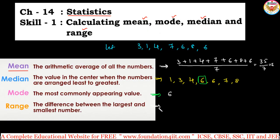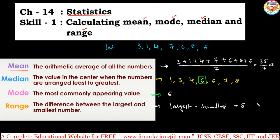Next, range is the largest value minus the smallest value. In the given set, the largest is 8 and the smallest is 1. So 8 minus 1 equals 7. Seven is the range.